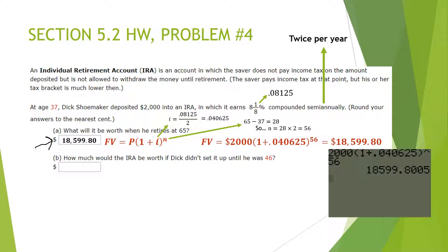For part B, almost everything is the same. The difference is: instead of opening the IRA at age 37, Dick sets it up at age 46. He still retires at 65, so it would be 65 minus 46 instead of 65 minus 37. Otherwise, the calculation is exactly the same.